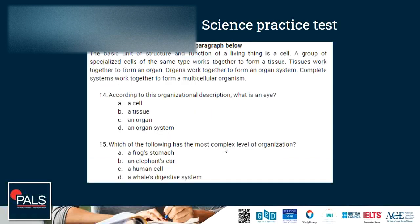Questions 14 and 15 are based on a paragraph. The basic unit of structure and function of living things is the cell. A group of specialized cells of the same type works together to form a tissue. Tissues work together to form an organ. Organs work together to form an organ system. Complete systems work together to form a multicellular organism. According to this organizational description, what is an eye? The correct answer is that the eye is an organ — it is made of several tissues that work together to perform a specific function.